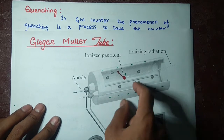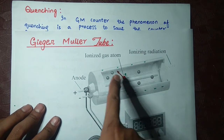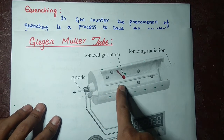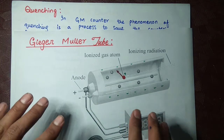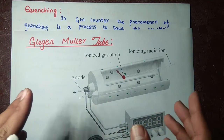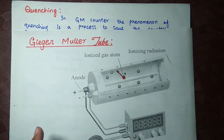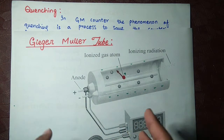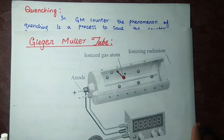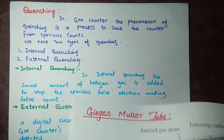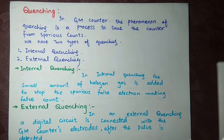When bromine absorbs the electron's energy, the electron has no kinetic energy left and cannot go to the anode. Because it cannot reach the anode, it cannot make a false count. This is how internal quenching works.